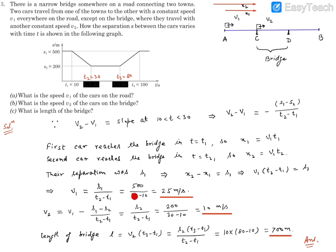Substituting numerical values: S1 is 500, T2 is 30, T1 is 10, so V1 equals 500 divided by 20, which is 25 meters per second. Now substituting this V1 into the relative velocity equation to get V2: V2 equals S2 divided by (T2 minus T1), which is 200 divided by 20, giving 10 meters per second. So on the bridge, the speed of the cars is 10 m/s, and on the road it is 25 m/s.